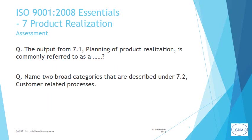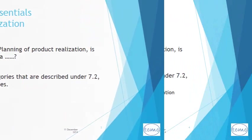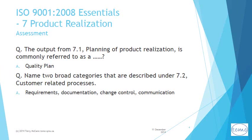Take time to do a self-assessment. The output from 7.1, Planning of product realization, is commonly referred to as a quality plan. Name two broad categories that are described under 7.2, Customer related processes. Pause the presentation here and answer both assessment questions, then proceed to the next slide to check your answers.